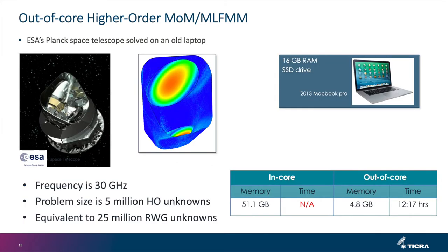Solving large problems on small computers: we solved the ESA Planck telescope on a 2013 MacBook with 16 GB of RAM, with about 5 million high order unknowns — roughly equivalent to 25 million RWGs. The in-core solution would require about 50 GB, but with the out-of-core solution we bring it down to 5 GB, and the solution is available overnight in 12 hours. We also offloaded a larger part of the MLFMM memory to squeeze it down as much as possible.